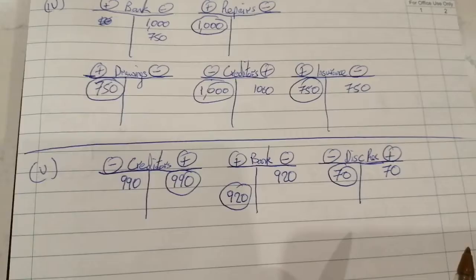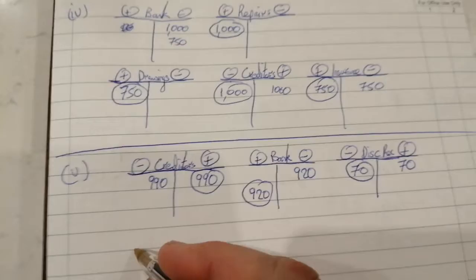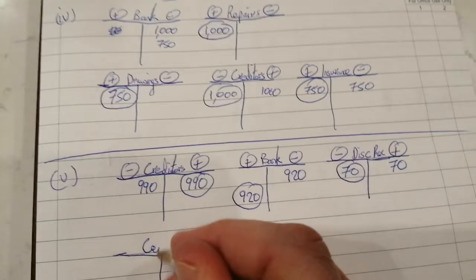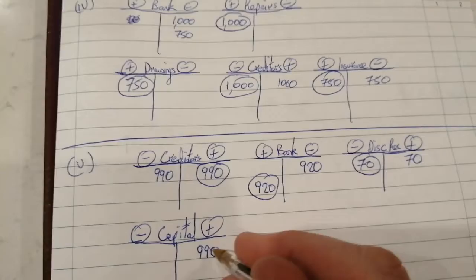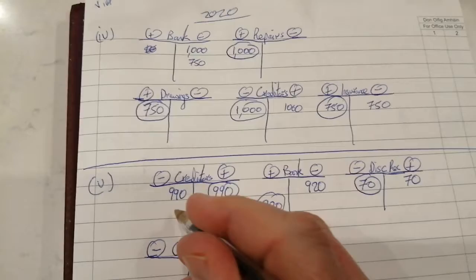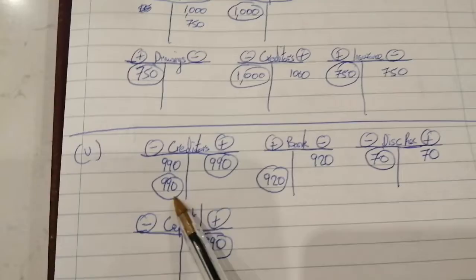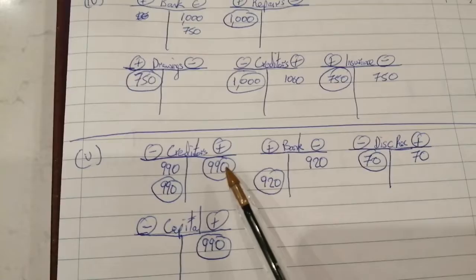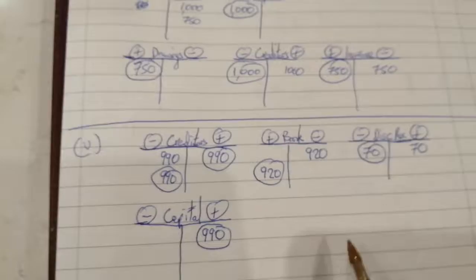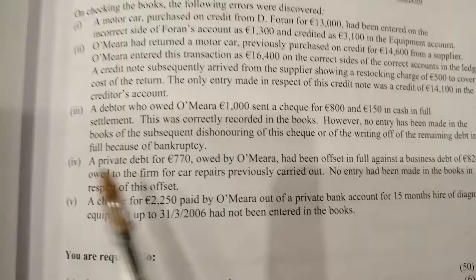After the dishonoring, Beglin made subsequent payment of the amount in full from a personal bank account — private funds. Anytime the owner uses private funds, capital goes up. Capital goes up by £990 and the amount owed to creditors goes down again by £990. Even though these cancel each other out in the creditors account, we still enter both: creditors £990 and creditors £990. That gives us five entries total with no suspense account needed.